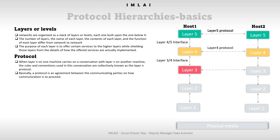In fact, the protocol itself can change in some layers without the layers above and below even noticing. A set of layers and protocols is called a network architecture. The specification of an architecture must contain enough information to allow an implementer to write the program or build the hardware for each layer so that it will correctly obey the appropriate protocol. Neither the details of the implementation nor the specification of the interfaces is part of the architecture, as these are hidden inside the machines.